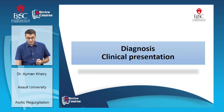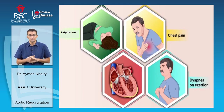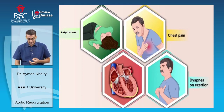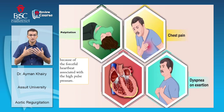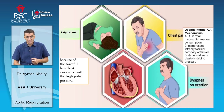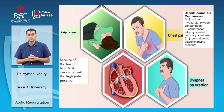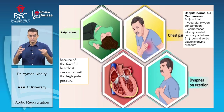The clinical presentation of patients with aortic regurgitation involves three main complaints: palpitation, angina pain, and dyspnea on exertion. Palpitation results from forcible heartbeats associated with high pulse pressure and proximity of the left ventricular apex to the chest wall due to LV dilatation. Angina can occur with normal coronary arteries due to increased total myocardial oxygen consumption from LV dilatation.